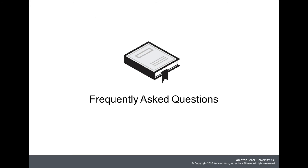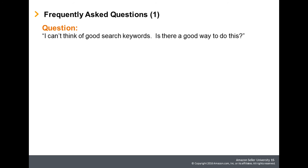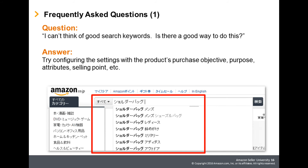In the following, let's introduce frequently asked questions from sellers. First frequently asked question: I can't think of good search keywords. Is there a good way to do this? Buyers search for products with various objectives and purposes. Try configuring the settings with the product's purchase objective, purpose, attributes, selling point, etc. Also, you can utilize Amazon's search prediction function, which displays related keywords for the keywords often entered in the search box.